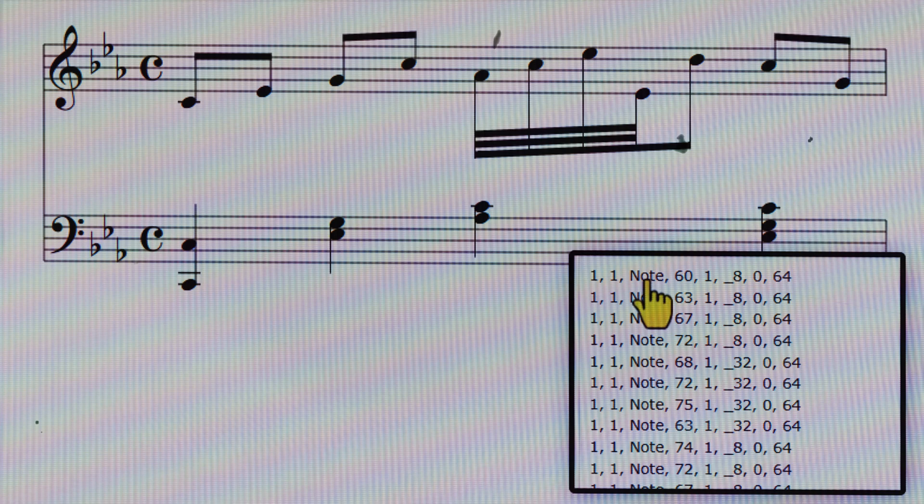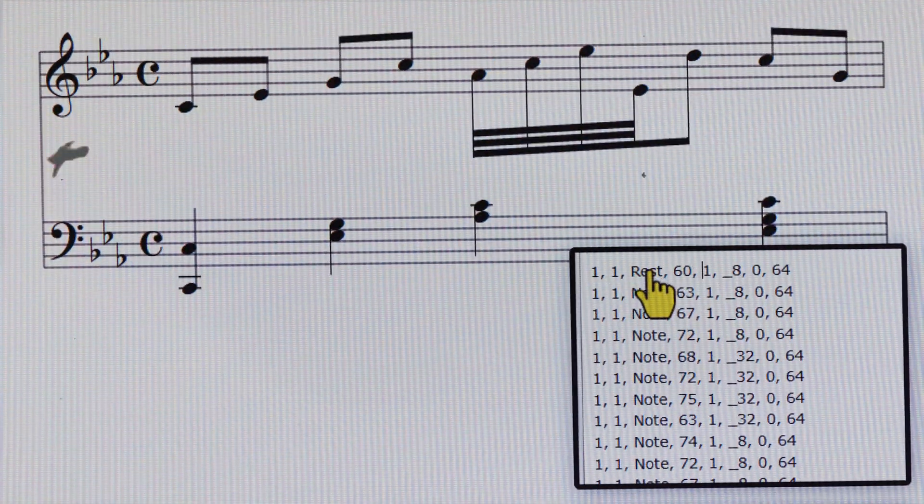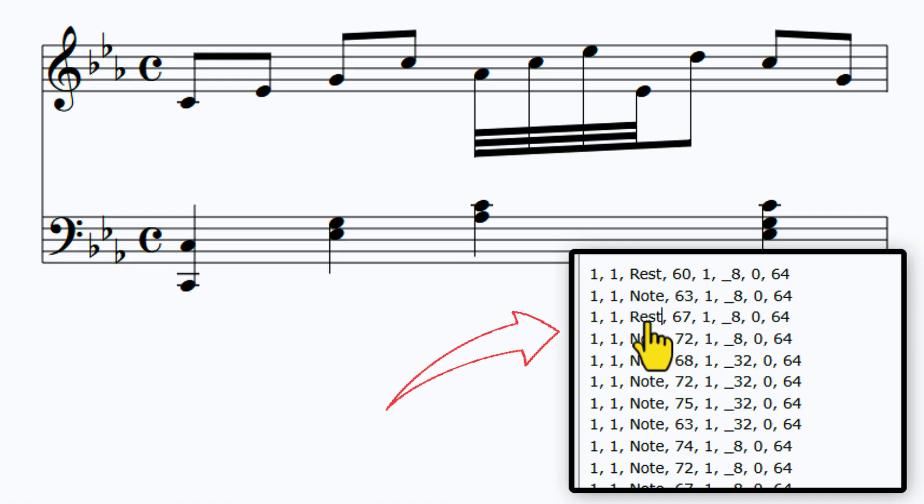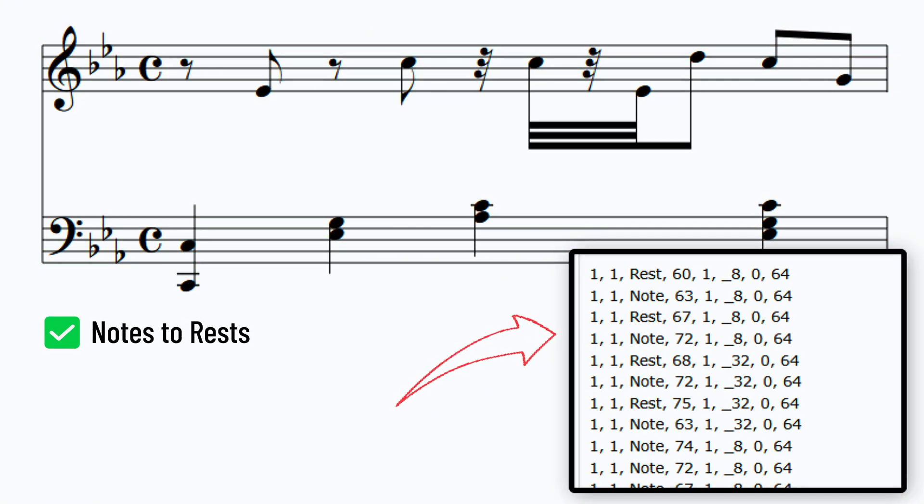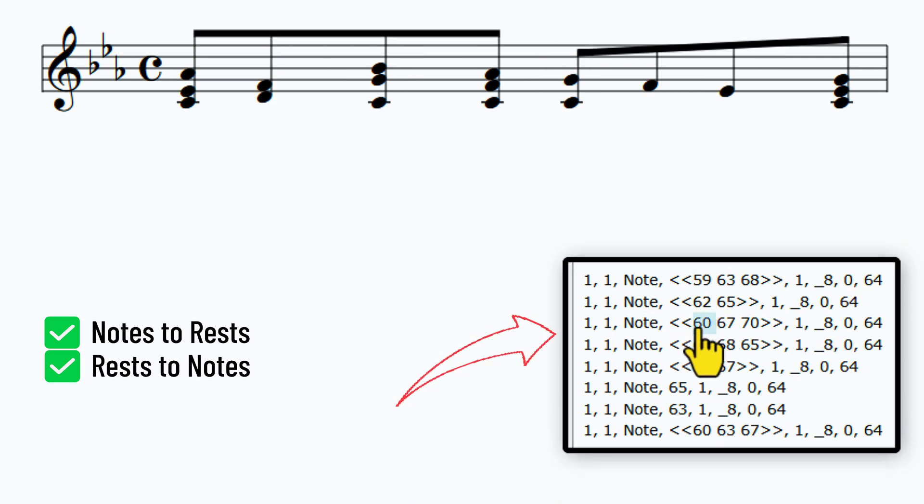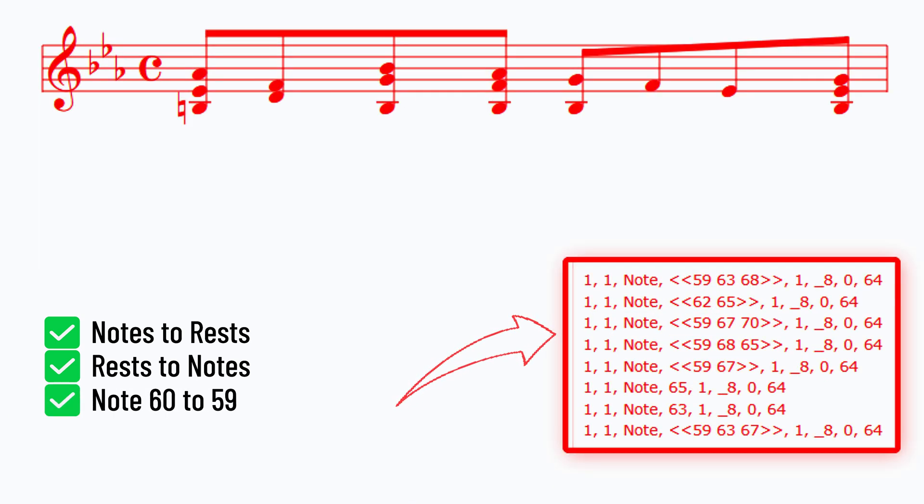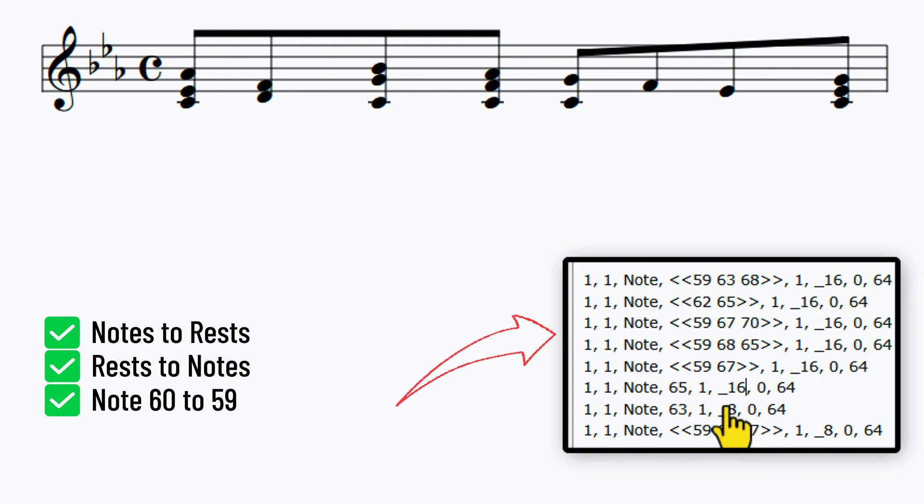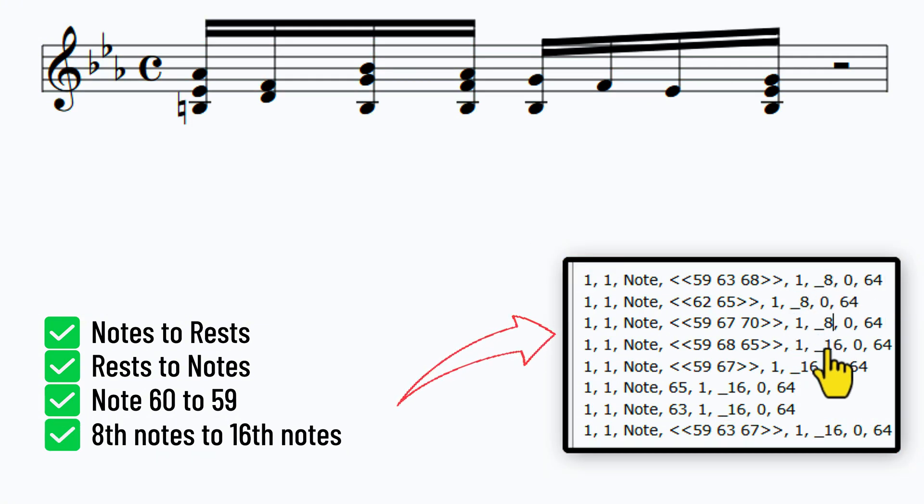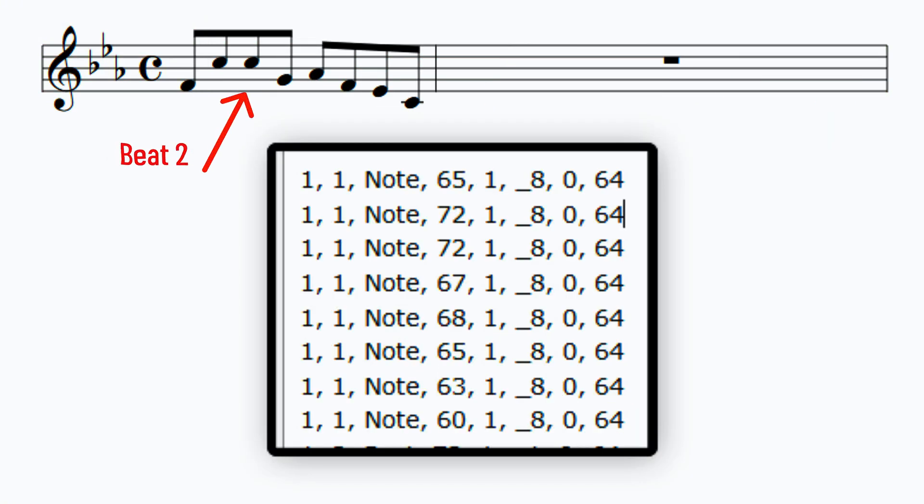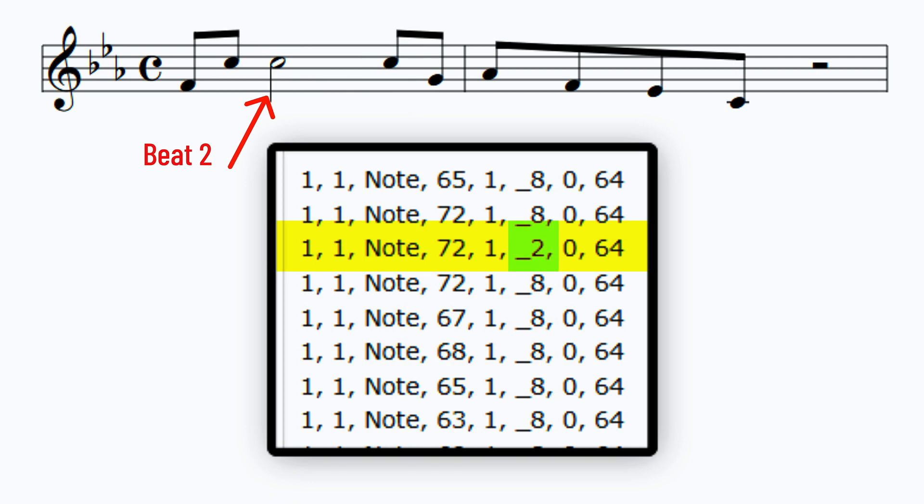But there are other uses for this. For example, when you place your text notation in the import text box, you can convert notes to rest, or rest to notes. You could change all C's to B's. You can convert a series of eighth notes to sixteenth notes, or the other way around. Or let's say you have a full measure of eighth notes, and you wanted to insert a half note on beat 2. Well, now you can easily do this with this method.